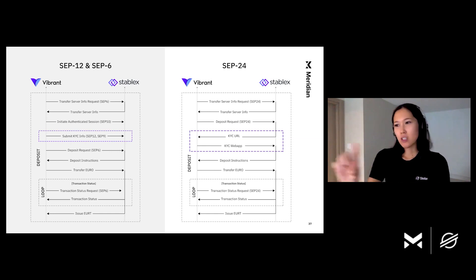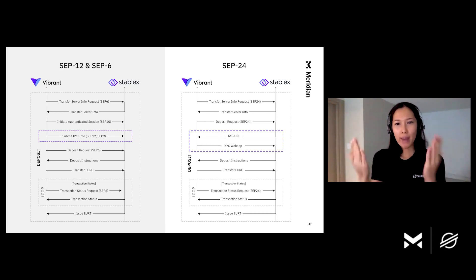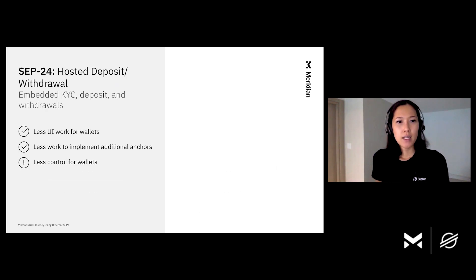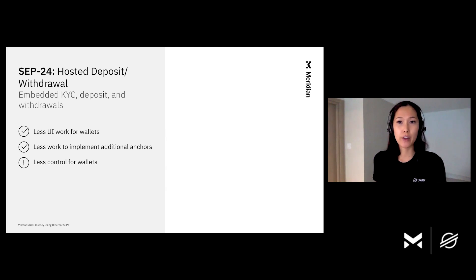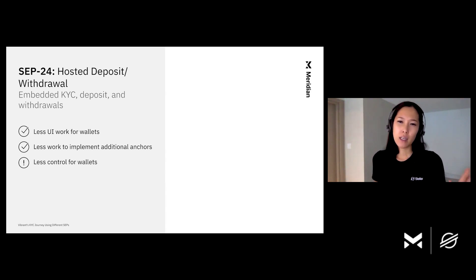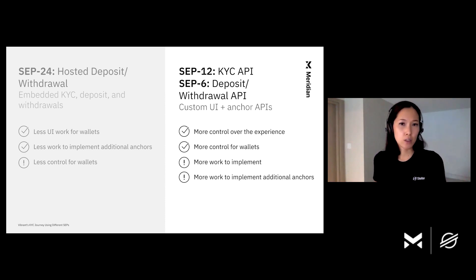With SEP12 and SEP6, it's a KYC API that the wallet side submits. With SEP24, we get the KYC URL from the anchor and show what they give us within a web view. SEP24 is great if you want less UI work and less work to implement additional anchors when expanding to other countries, but it gives wallets less control. SEP12 and SEP6 are great if you want more control over the experience, but require more work and resources to implement, and more work to add additional anchors.